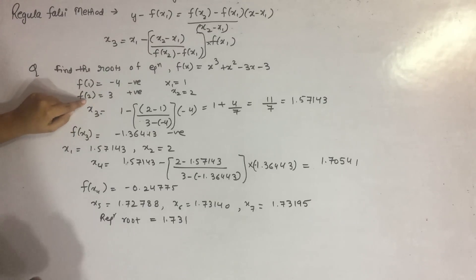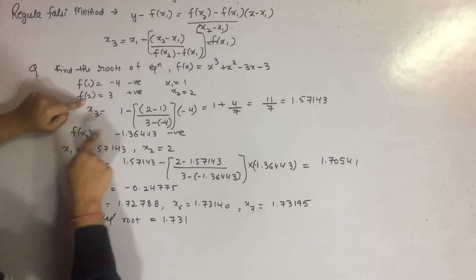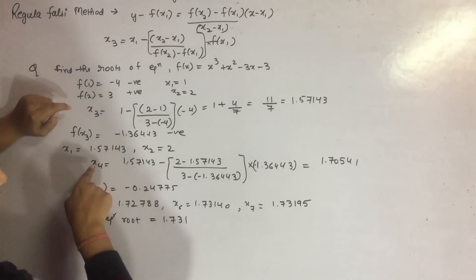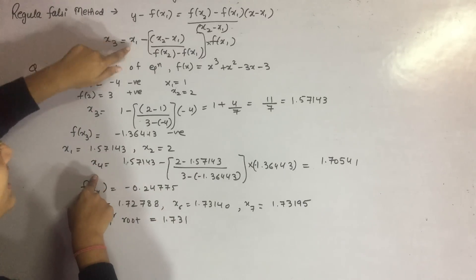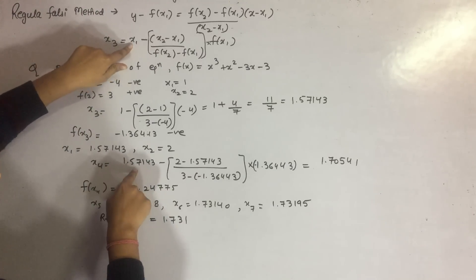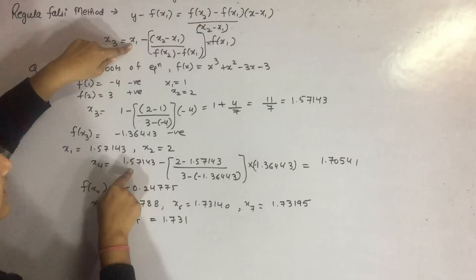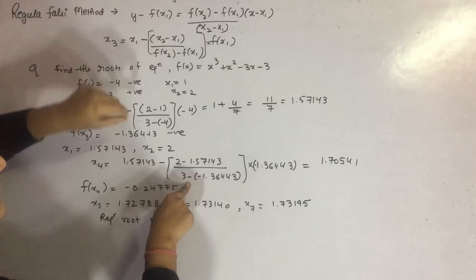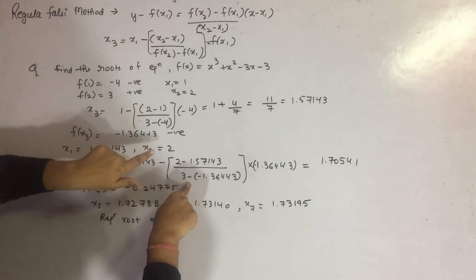So your x2 is 2, and your x1 is x3, which means 1.57143. Now you have to find out the value of x4. x4 will be x1 minus (x2 minus x1) divided by (f(x2), f(x2), f(x2) means f(2)...